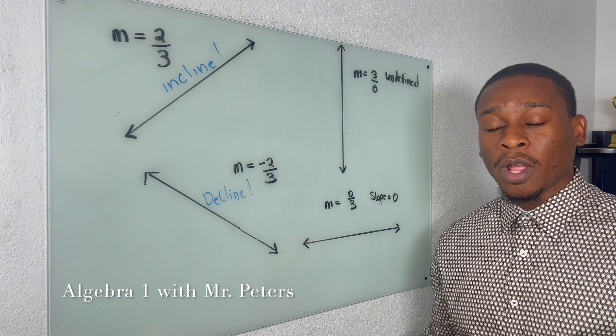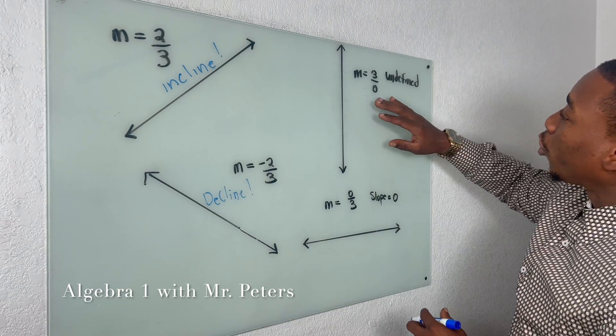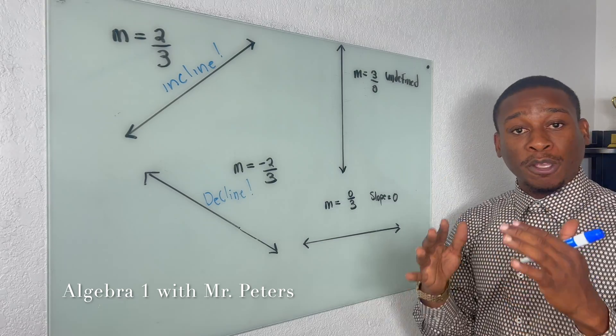When we go to our second example, our slope is negative. Negative slopes are going to be on a decline, right? So just imagine we're going down some stairs, down a hill, that will be a negative slope.